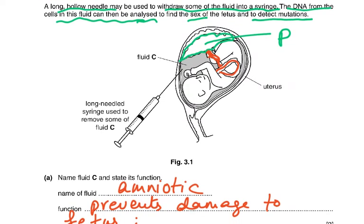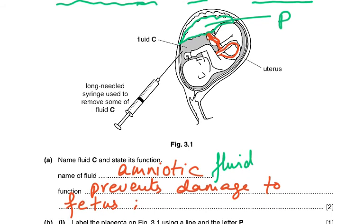Name fluid C and state its function: fluid C is amniotic fluid. Whether you wrote 'fluid' or not doesn't matter — 'amniotic' is the name. Its function is to prevent damage to the fetus. When the mother moves around, sleeps, or is sitting, the fetus cannot be in a dry environment — the fluid environment protects it from damage when the mother is lying down or standing.